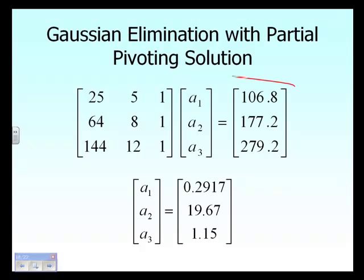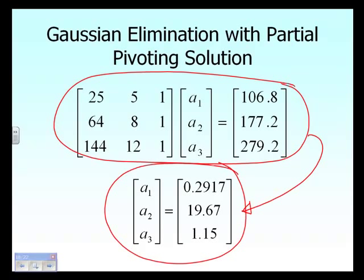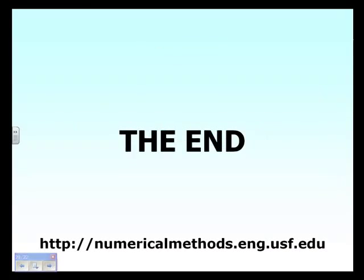We took three equations with three unknowns, reduced the coefficient matrix to an upper triangular matrix through forward elimination, then performed back substitution to find the solution. That is the end of this segment. Thank you.